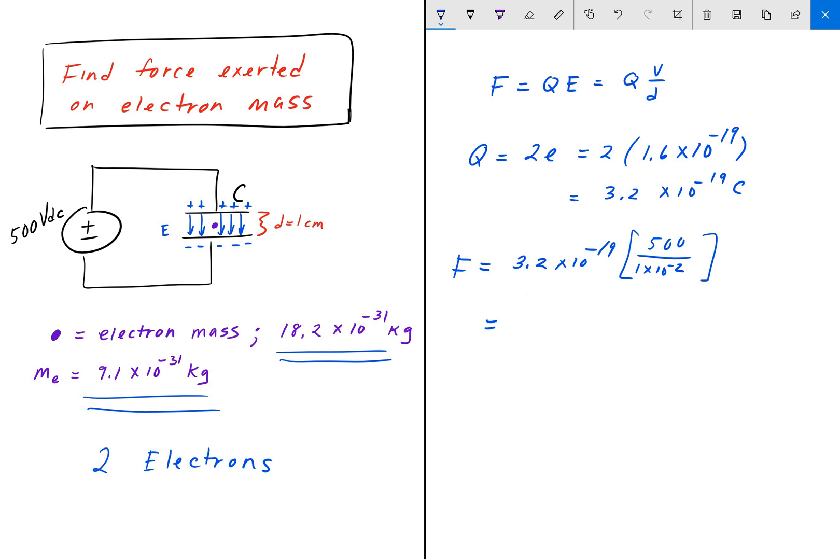When we do that, plugging it into the Casio calculator that I have on the link below, I get 1.6 times 10 to the negative 14, and the unit is newtons.